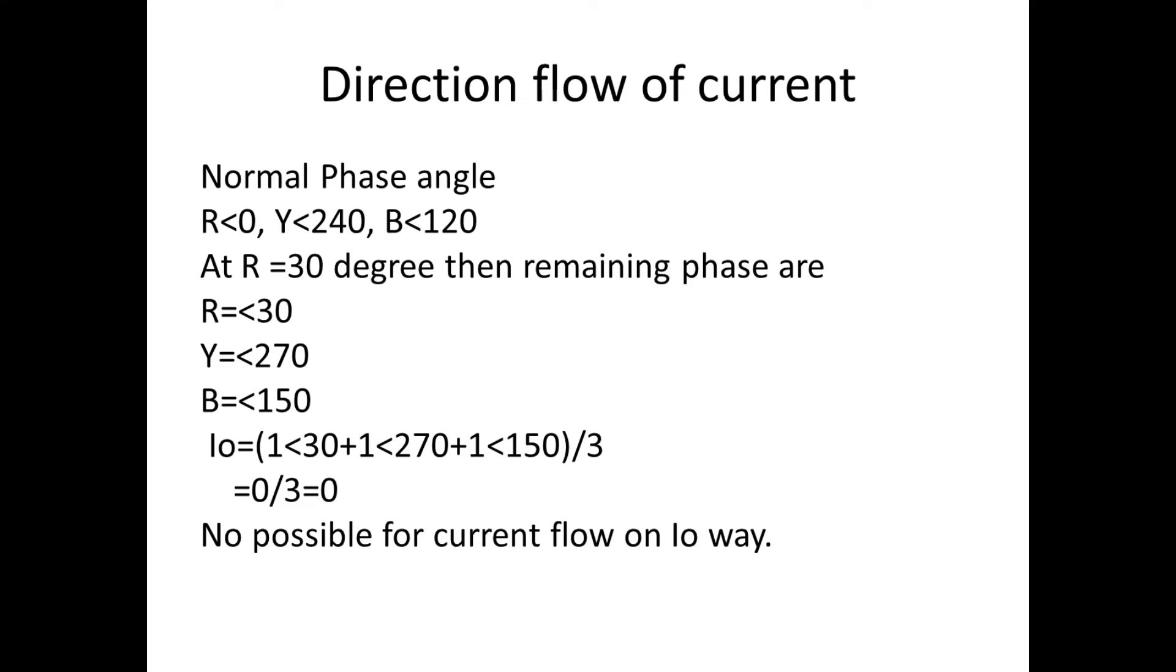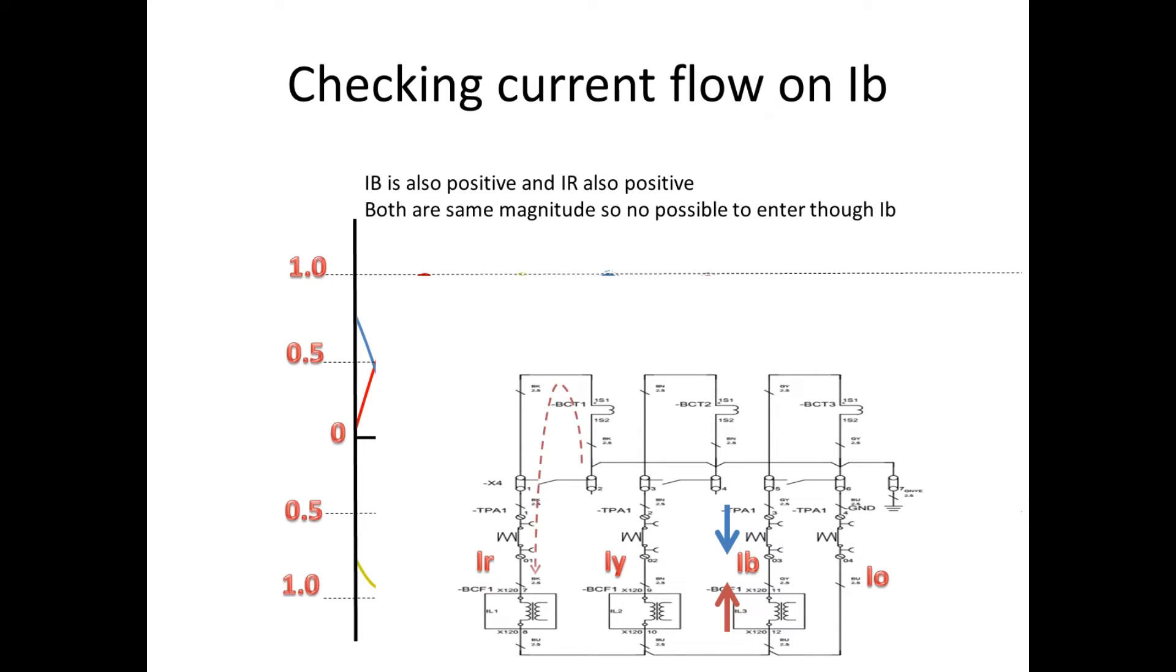Now we will see if there is any possibility to flow in B phase. In the waveform, B phase is also positive and R phase is also positive. Both are same magnitude also. There is no possibility to enter through IB because when you enter into IB, the R will face directly opposite to IB current. Since they have equal positive and equal magnitude, it is not able to flow in this path.